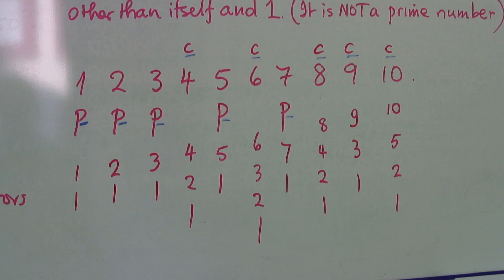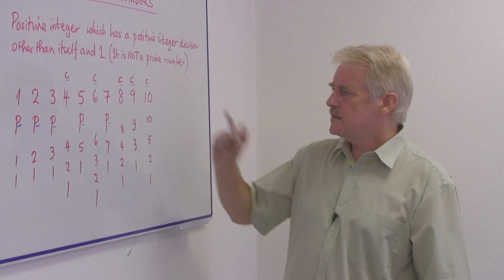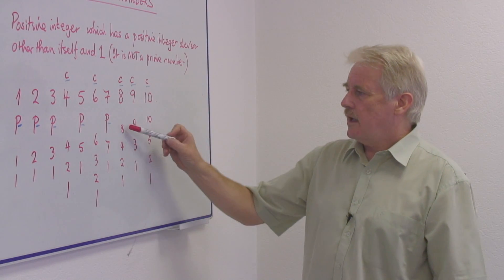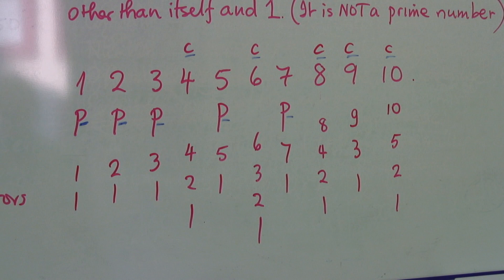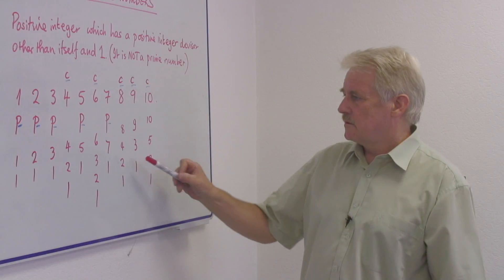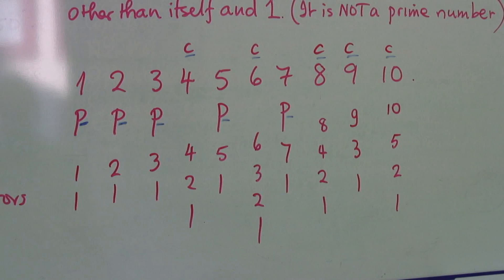Seven: seven and one are the factors — it's a prime number. Eight: eight, four, two, and one are factors of eight. Two times four is eight, one times eight is eight — so that is a composite number.